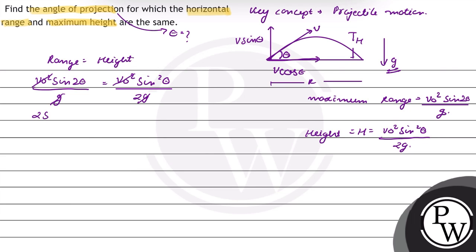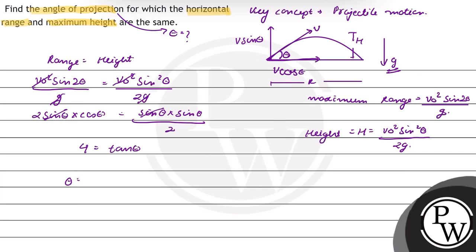Expanding sin(2θ) as 2 sin(θ) cos(θ), we get: 2 sin(θ) cos(θ) = sin²(θ) / 2. Sin theta cancels, leaving: 4 cos(θ) = sin(θ), which gives tan(θ) = 4. Therefore, theta is equal to tan inverse of 4.